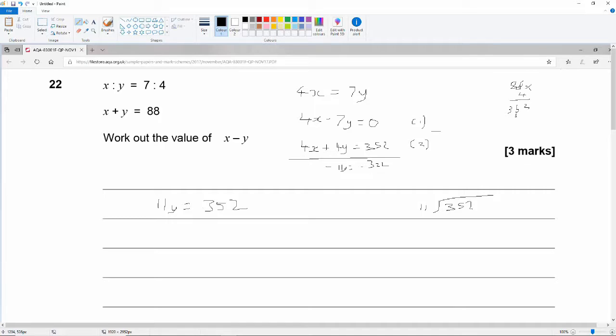Remember, this is the hard way. 11 divided by... okay, so 35 divided by 11 is 3. 3 times 11 is 33. Leaves 2. Bring down the 2. So that's 2. 2 times 11 is 22. So the answer is 32. So y is equal to 32.